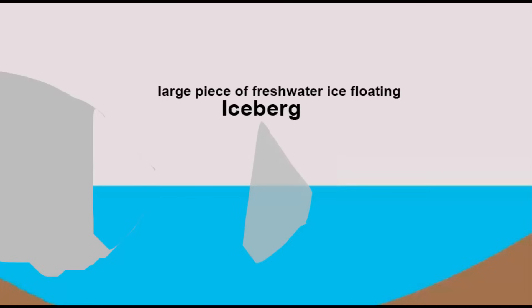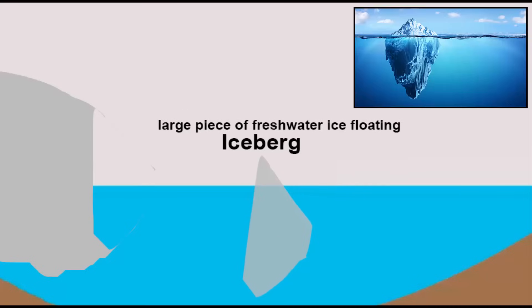So, iceberg is a large piece of freshwater ice floating in the open water. If you ever see an iceberg, only the tip of the iceberg is visible above water while nearly 90% of it is underwater. After all, it's a heavy piece of glacier.